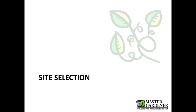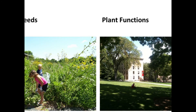Starting off with site selection, the very first thing is deciding what to plant where. To do that, you need to take into consideration the function that the plant is going to perform in the landscape, and landscape design is a great way to really give some thought to that. Is that plant serving the purpose of creating a barrier between you and an unsightly view? Is that plant a specimen plant? Is it part of a group planting that's meant to draw your eye to a certain part of the property? Plant function is one criteria.